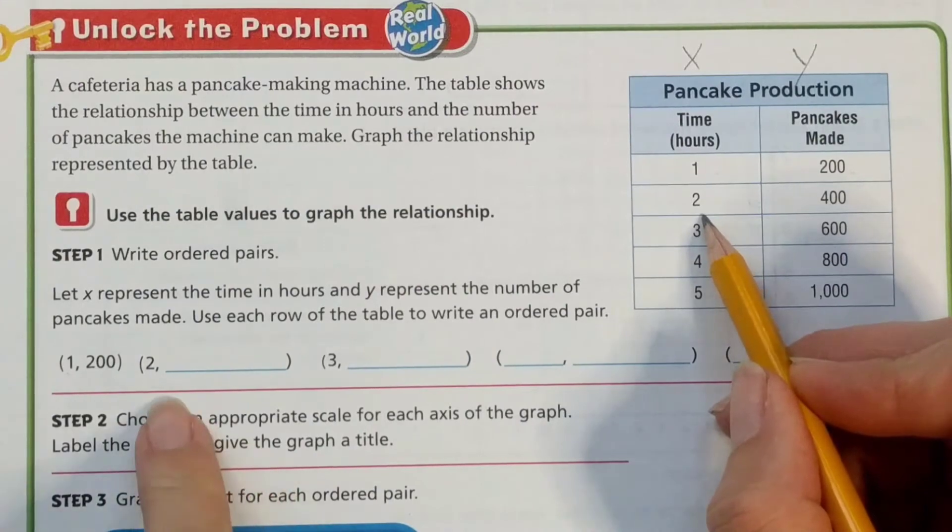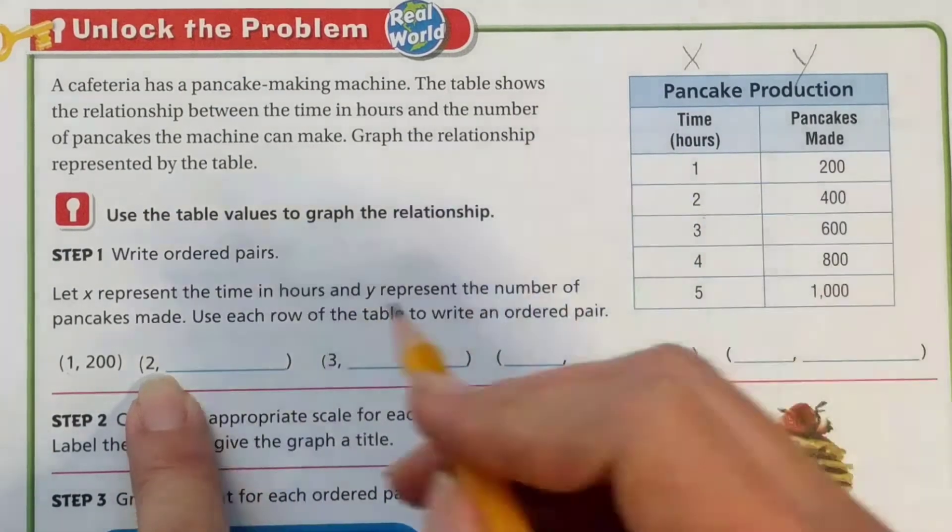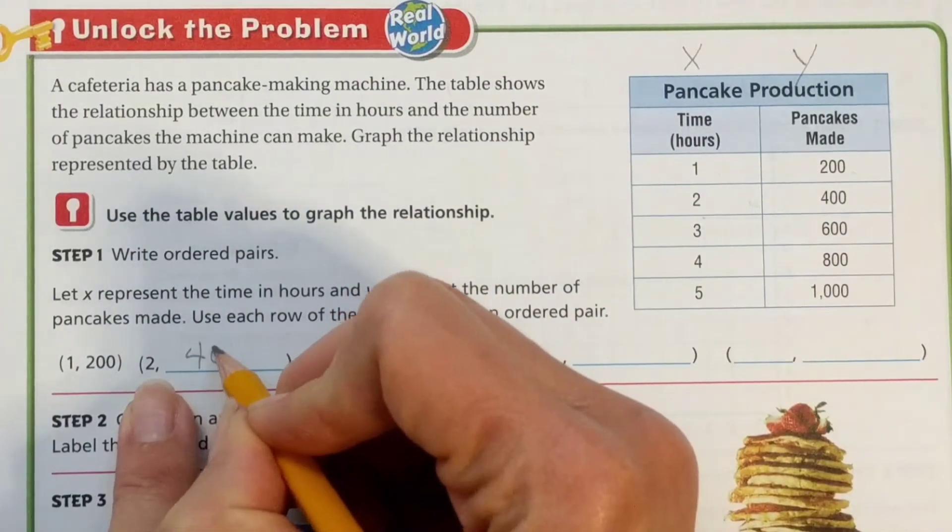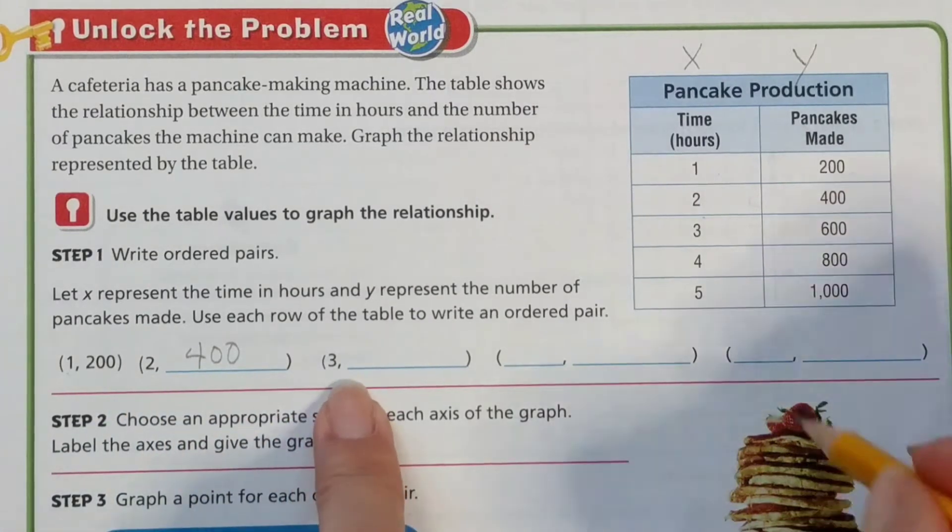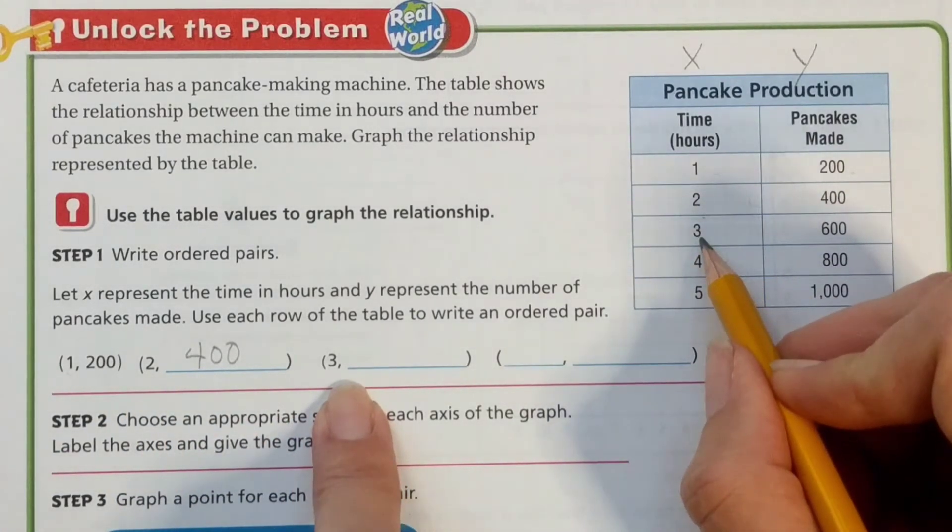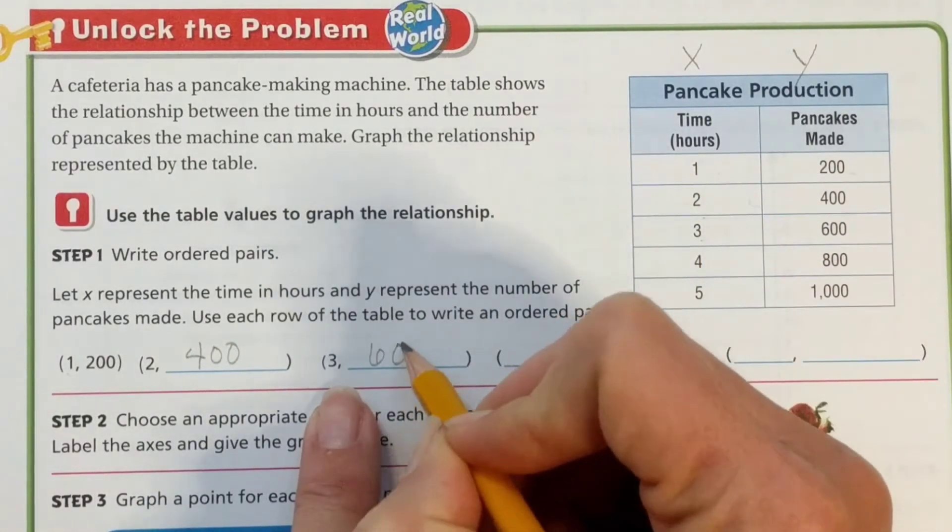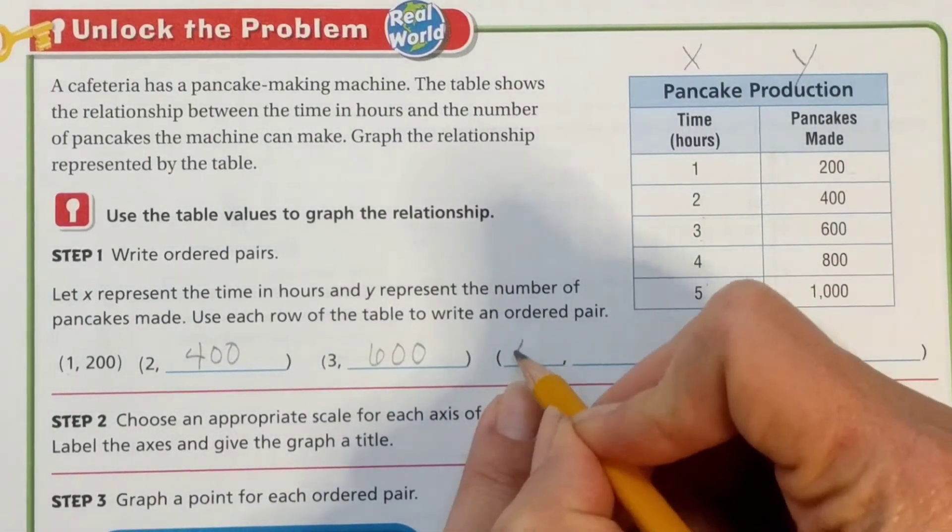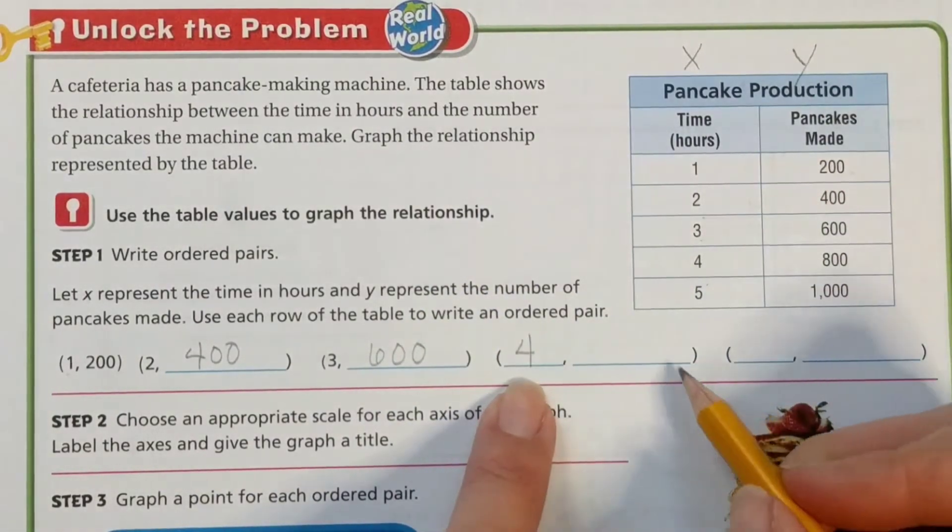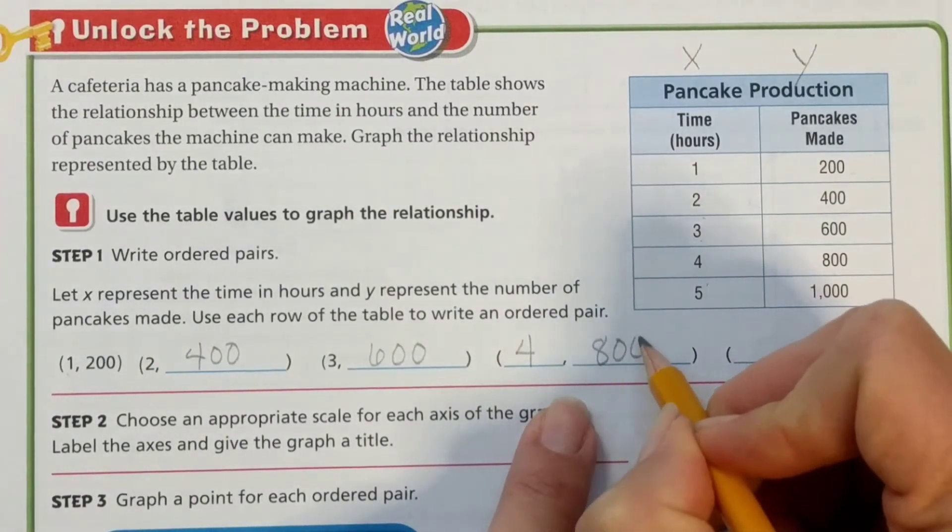So for the second one, in two hours they made 400 pancakes. So we're going to write the 400 over here in the Y position of our ordered pair. There's our X, three. And in three hours they made 600 pancakes. In four hours, once again, that is our X coordinate. Our Y coordinate is 800 pancakes.